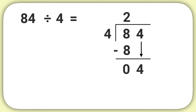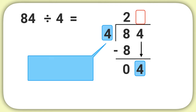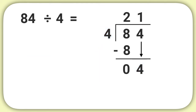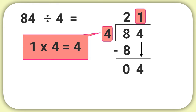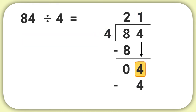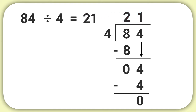Now figure out the rest on your own. We need to divide 4 by 4. 4 divided by 4 equals 1, so we write a 1 above the line. Next we multiply 1 times 4 equals 4. We write it into our problem and subtract 4 minus 4 to get 0. We can see our answer above the line: 84 divided by 4 equals 21.